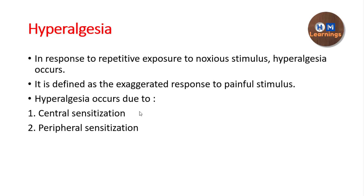So first we will look at the definition of hyperalgesia, and then we are going to see why and how it happens. Algesia means pain, and hyper means excessive. So hyperalgesia is the condition in which the patient is feeling hyper — or more — pain. The patient becomes more and more responsive, or more and more sensitive to pain. When the patient has continuous exposure to a noxious stimulus, the area exposed to that pain again and again will become hyper-responsive and hypersensitive to pain.